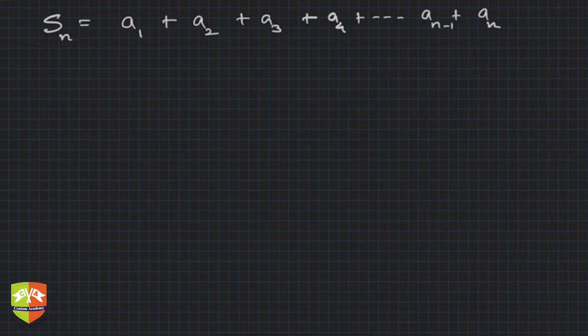Let's say Sn is equal to a1, where n depicts number of terms: a1, a2, a3, a4, plus an-1 and an - sum of n terms of a GP. This is step number 1.